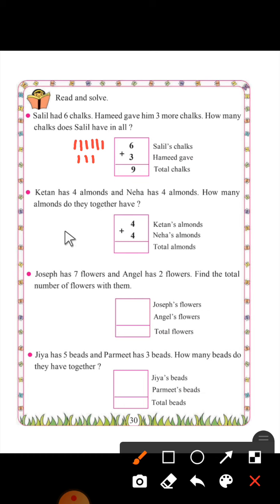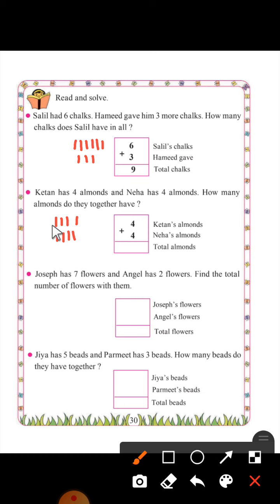Ketan has four almonds and Neha has four. How many almonds do they have together? Ketan has four almonds: one, two, three, four. Neha has four almonds: one, two, three, four. Count together: one, two, three, four, five, six, seven, eight. So total almonds are eight.